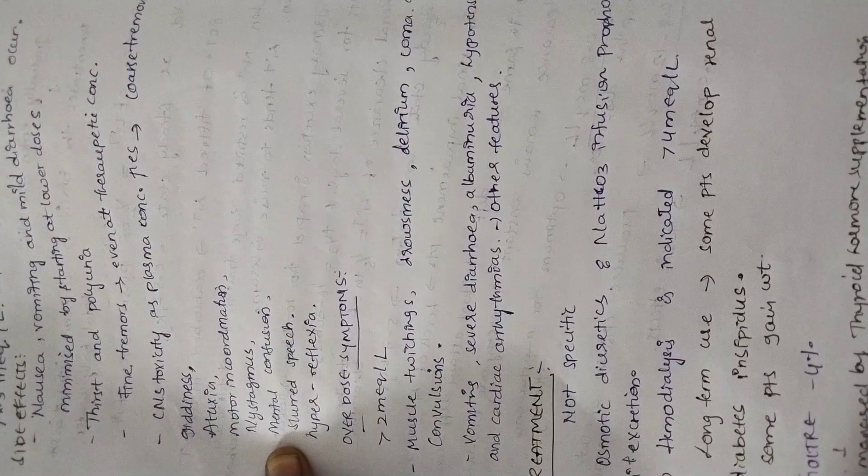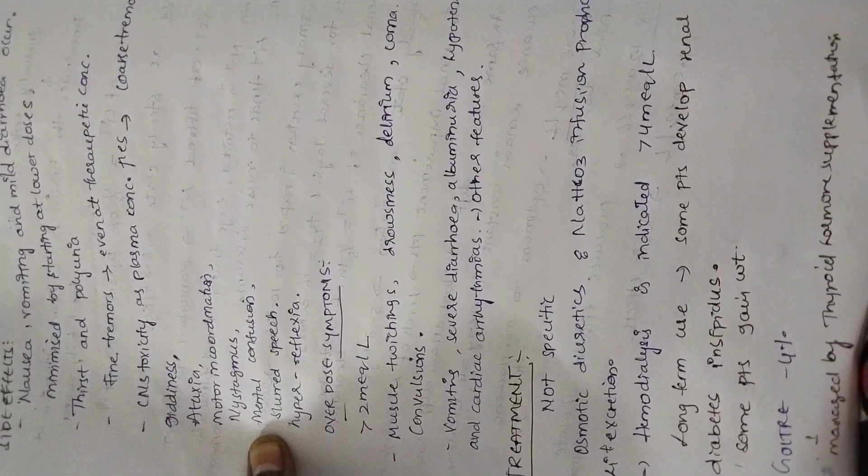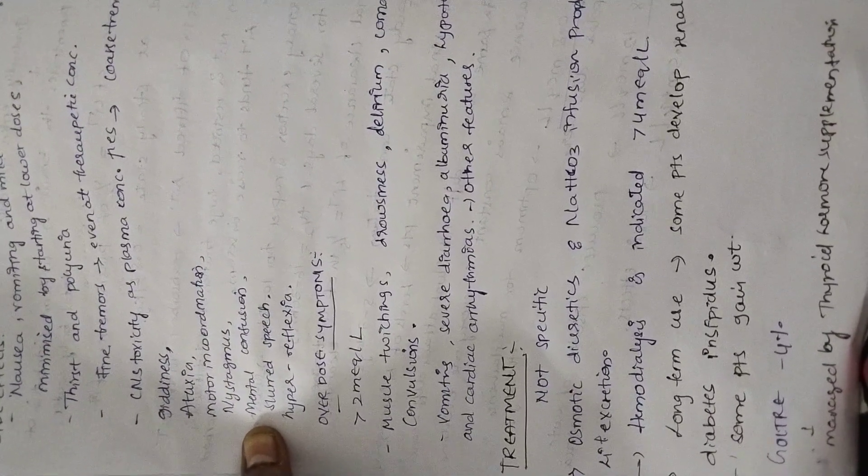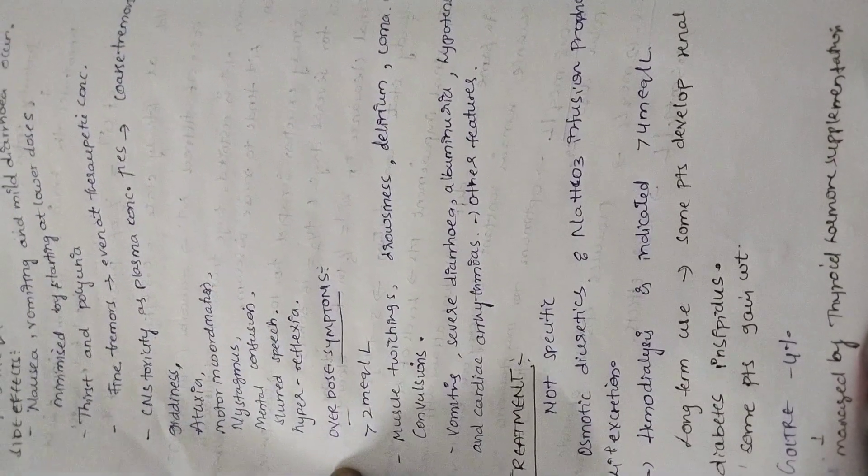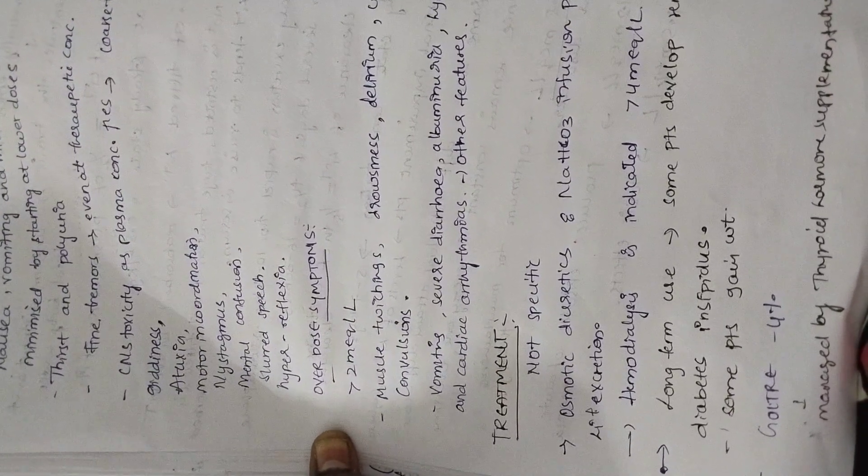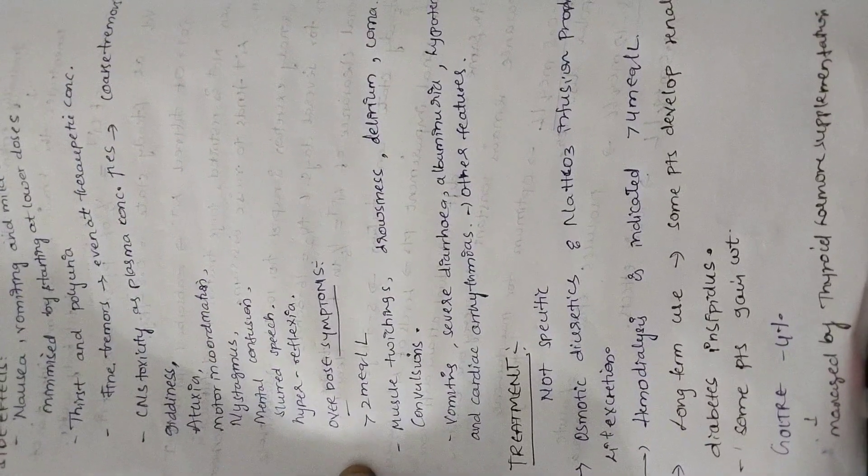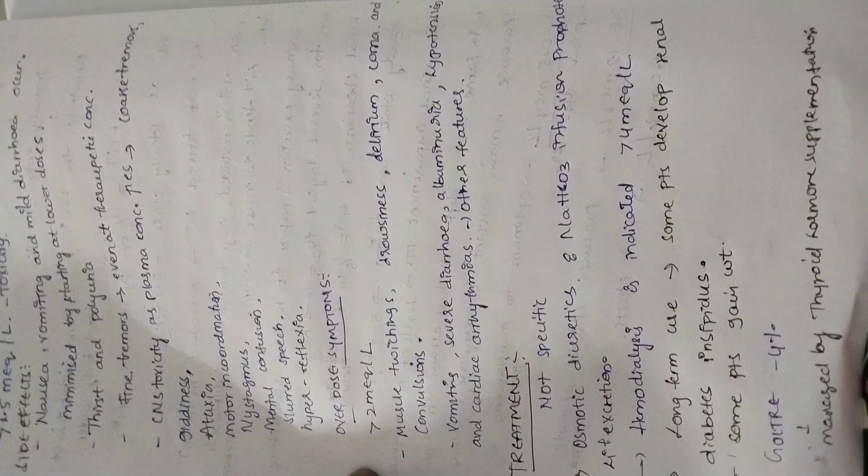CNS toxicity as plasma concentration increases: coarse tremors, giddiness, ataxia, motor incoordination. Cerebellum is affected, so motor incoordination, nystagmus, and cerebellar ataxia are occurring. Mental confusion, slurred speech, hyperreflexia are common side effects of lithium. Overdose symptoms occur when we give greater than 2 mEq per liter. Effects seen include muscle twitching, seizures, drowsiness, delirium, coma, and convulsions. Vomiting, severe diarrhea, albuminuria, hypotension, cardiac arrhythmias may occur in some patients.